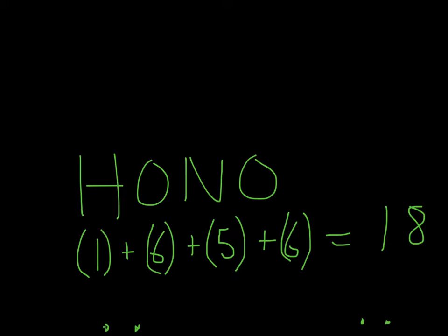So H is in group 1, so it will be 1. Oxygen is in group 6. Nitrogen is in group 5, and oxygen is in group 6. Total number of electrons will be 18.